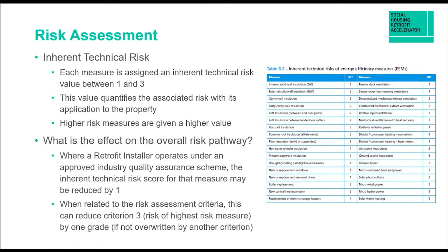So the example here is that criterion three — the risk of the highest measure — can be brought down by one grade, but only if it's not overwritten by another criteria. For instance, you may be doing EWI but if you're installing across 30 or more properties, the overall risk pathway would be a C regardless of the impact on criterion three. It's important to understand the risks with the measures you're putting forward and how they might affect the project overall.